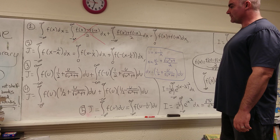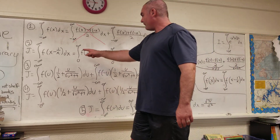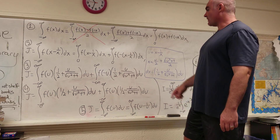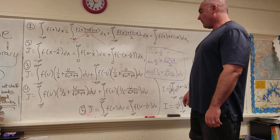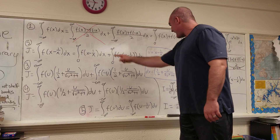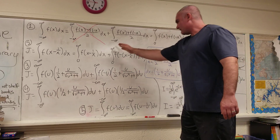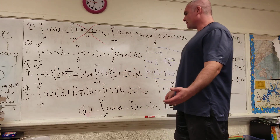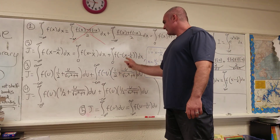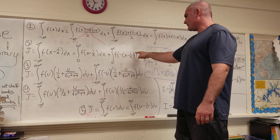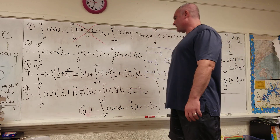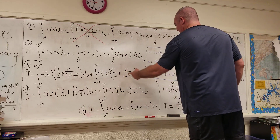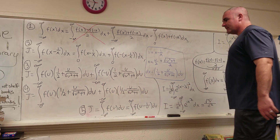We plug in our substitution: f of x minus 1 over x just becomes f of u, and dx becomes our expression. For the f of negative x part, we get f of negative u times that same dx — you can see this gives negative u there. So we get the integral from negative infinity to infinity of f of negative u times that dx.